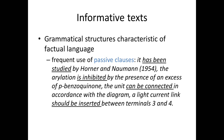We can see the same thing in the technical instructions: 'The unit can be connected in accordance with the diagram' and 'A light current link should be inserted between terminals 3 and 4'. This is because the emphasis in these texts is not on who is doing it — indeed, for the instructions, the whole point is that anyone could do it by following the instructions — but on what is being done and what the outcome is. This is to do with the need for factual language to come across as objective: not so much concerned with the actions or opinions of individuals, as with more general events, rules, or processes.